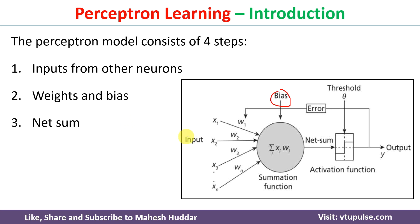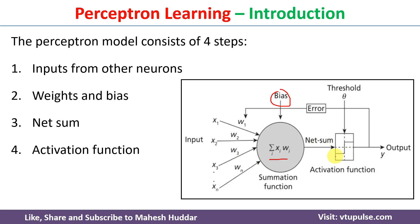Whenever we have inputs and weights, we compute something known as the net sum. That is the multiplication of each input and its corresponding weight, and then we take the sum: x1·w1 + x2·w2 + x3·w3 and so on. Once you calculate this net sum, we apply something called an activation function on top of it, and based on the activation function we get the output.